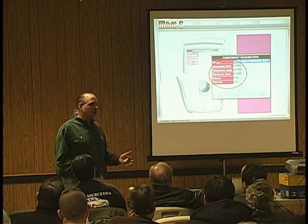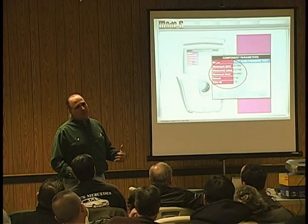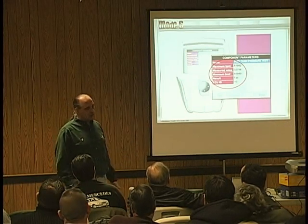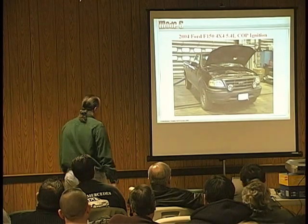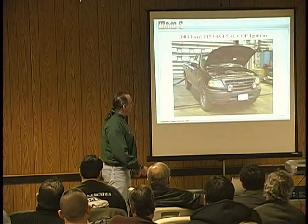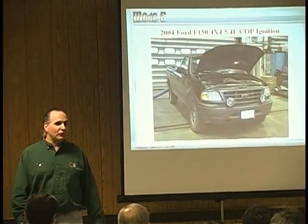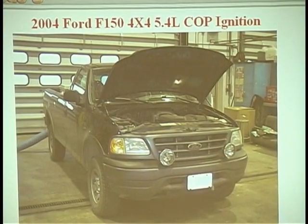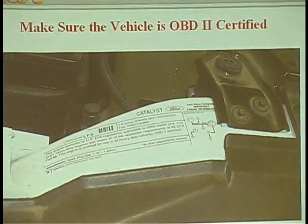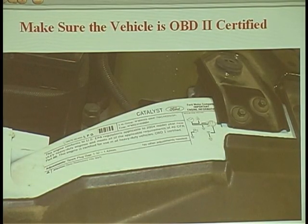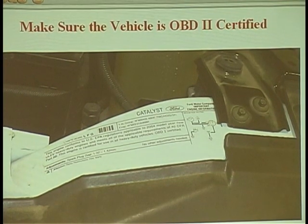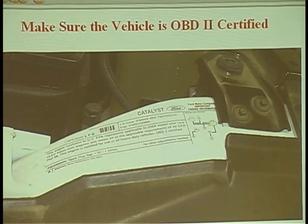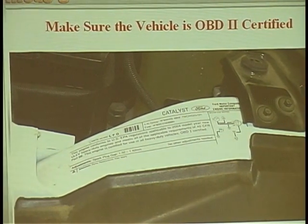Some scan tools are more user-friendly, as you can see going through here. You can see what I favor — like I favor this tool, I favor Bernie's tool; it makes my life easier. Here's a case study: a 2004 F150 4x4 5.4-liter coil-on-plug, up in Alaska. Make sure the vehicle is OBD2 certified. Here's a guy that read stuff on IATN — IATN could get you in trouble; it's a phenomenal resource but you've got to know what you're looking at.